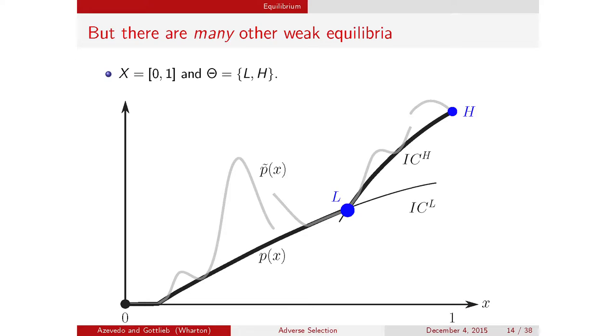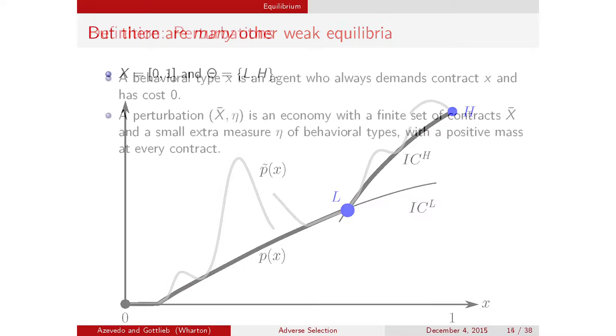However, this is not a very good equilibrium notion because there are going to be a lot of other equilibria. The condition that price equals average cost tells you what the price of things being sold should be, but says nothing about the price of things that are not sold. For example, if I change that price curve, that's also an equilibrium. I could even have every type of insurance priced very high so nobody buys anything—and that's an equilibrium because price equals average cost. The problem is that you get way too many equilibria.